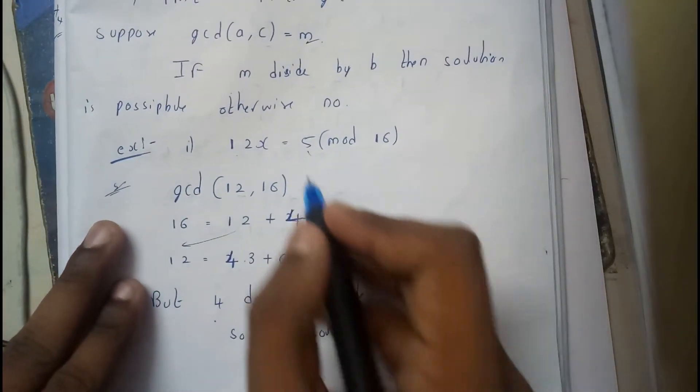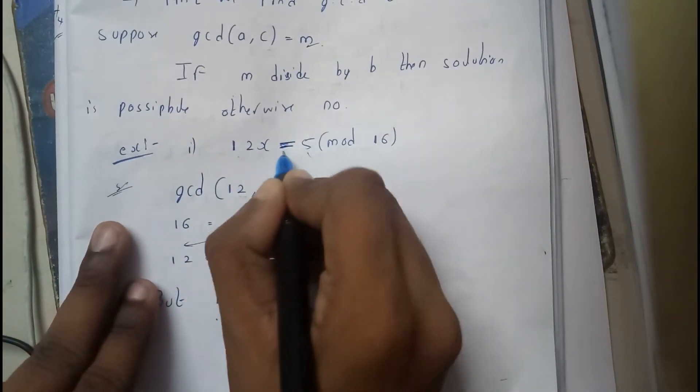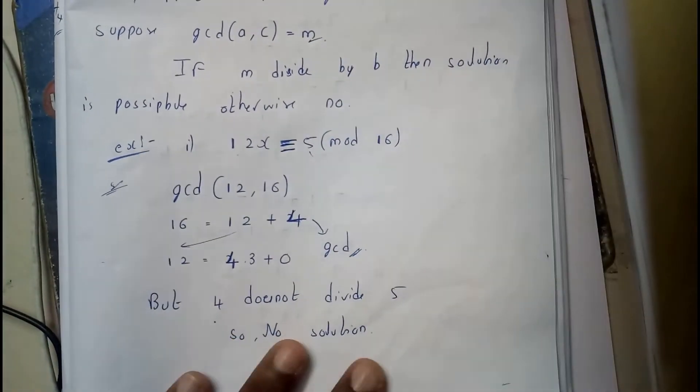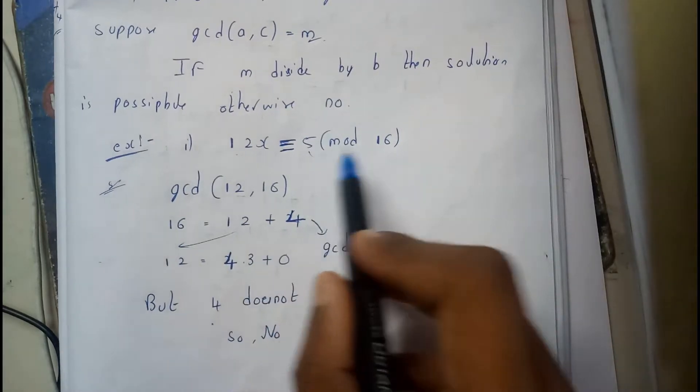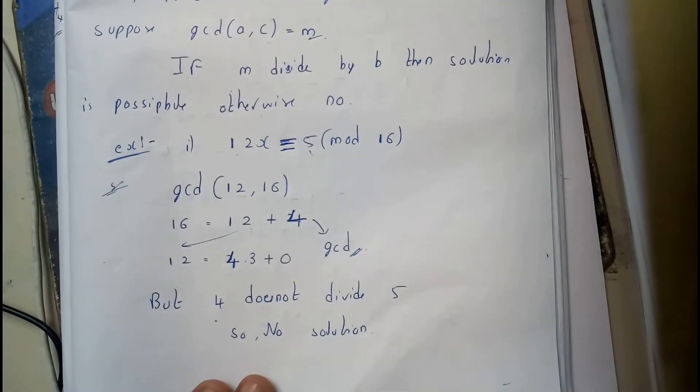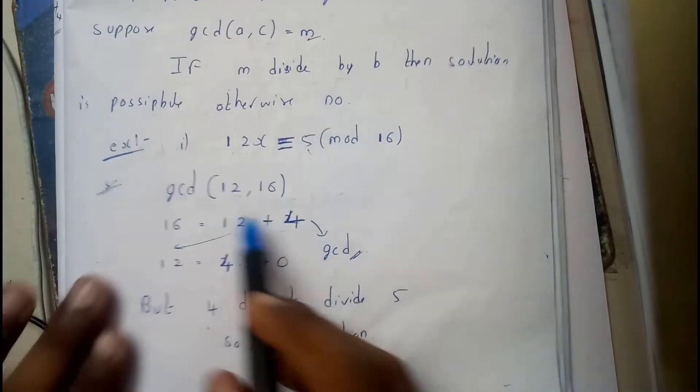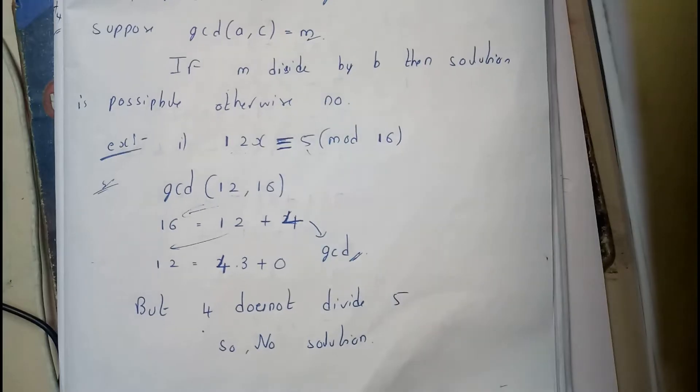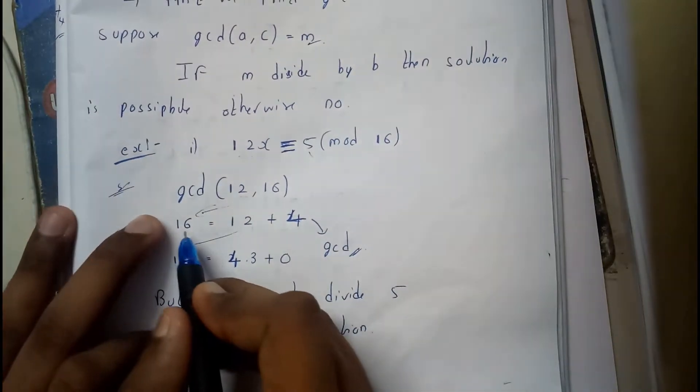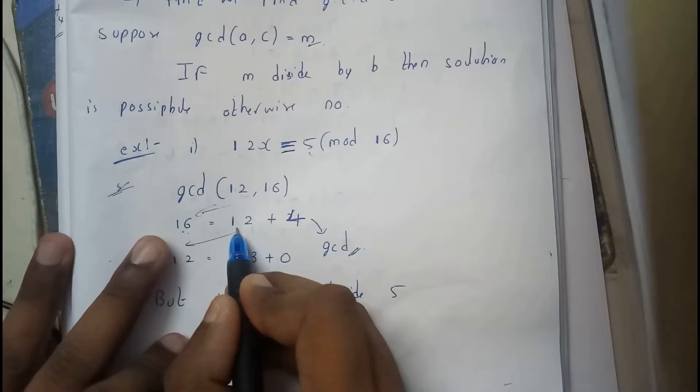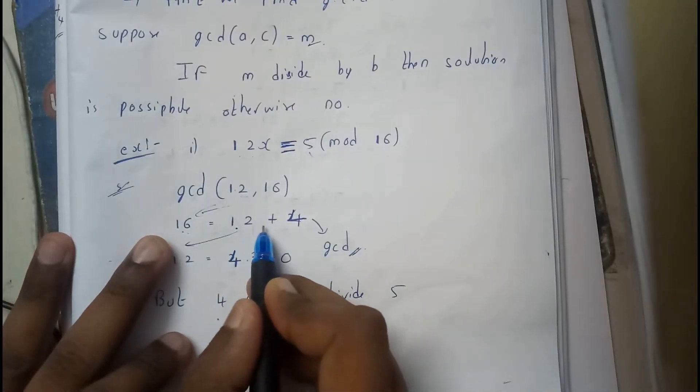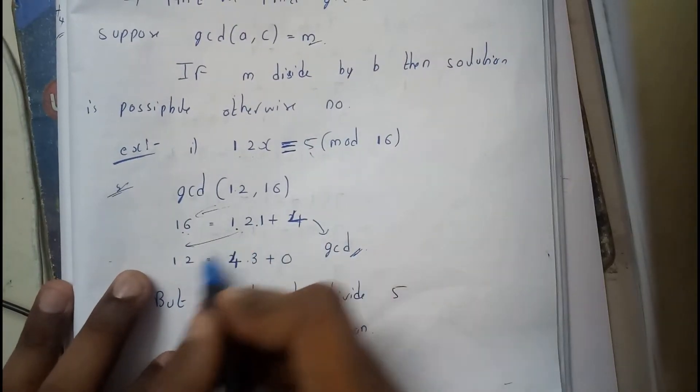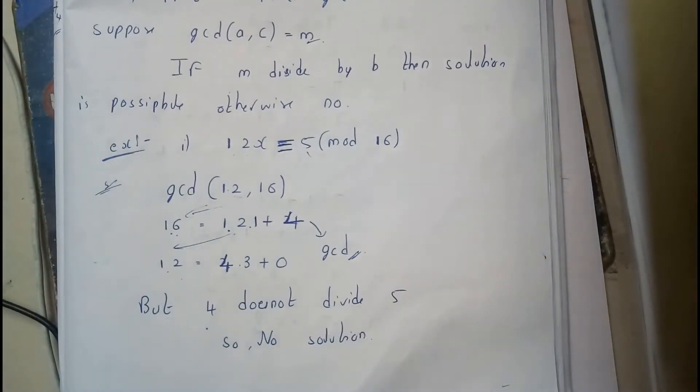Here it is given 12x equality 5 mod 16. So I have told a comma c, this is a, this is c. GCD of a comma c, initially you will be writing c here. C is equals to a into some multiple plus reminder. That's the most important format. 16 is equal to 12 into 1 plus 4. Next you'll be writing 12 here, 12, 4 here, 4 into 3 is 12, so you got 0 here directly.